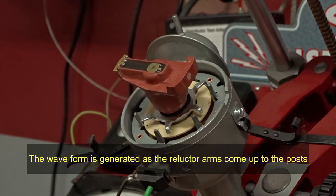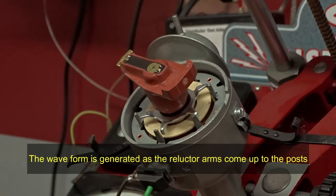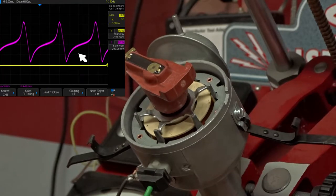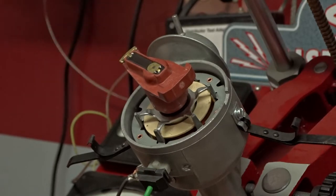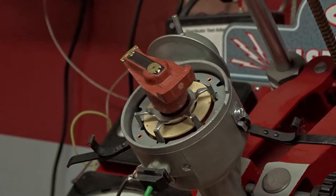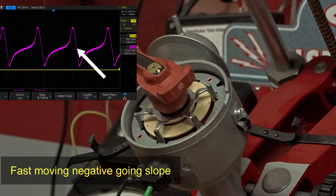As the stator is rotating, the closer it gets to these posts, the more positive going energy it's generating. As the stator crosses the reluctor posts, about a degree or two after it's crossed is what will cause the voltage to drop very, very quickly, creating our trigger edge.